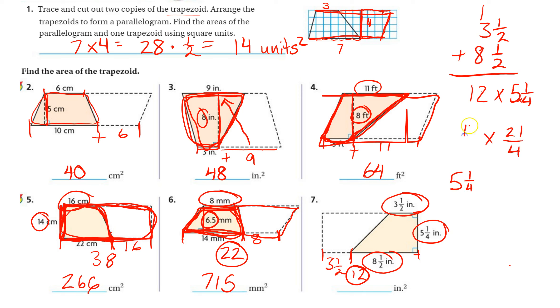Now I can do some cross-simplifying here. 4 goes into 4 one time, 4 goes into 12 three times. And now I have 3 times 21 is 63, 1 times 1 is 1. 63 over 1 is just equal to 63.